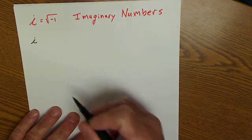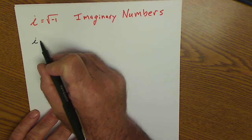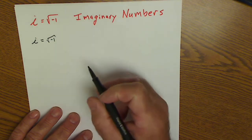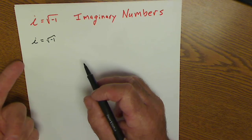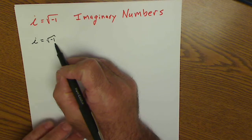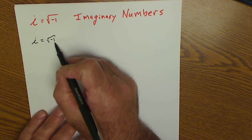So lowercase cursive i stands for imaginary. It is equal to the square root of negative 1. And the reason why it's imaginary is because what you're saying is what times itself equals negative 1. So there isn't anything that times itself is equal to negative 1.